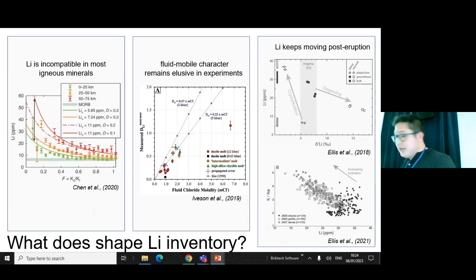However, in the plot in the middle, this is experimental work by Evenson and co-authors. Here in the y-axis we have the partition of lithium between fluid phase and the melt. They did different melt compositions from dacites to rhyolites and several fluid compositions. This is just the chloride molality—here is very salty, here is not that much.